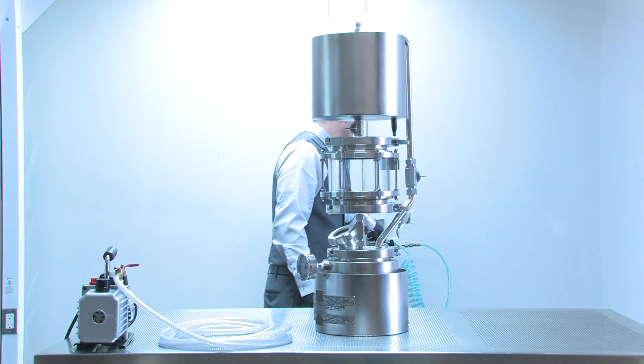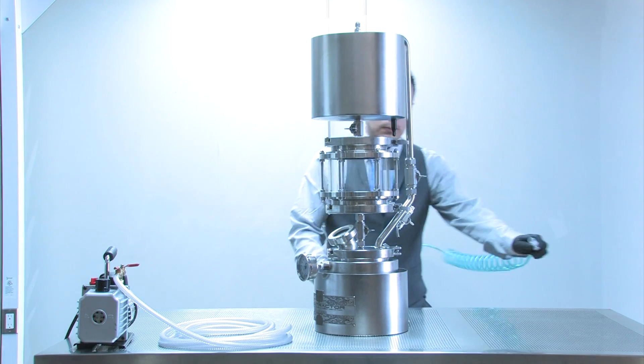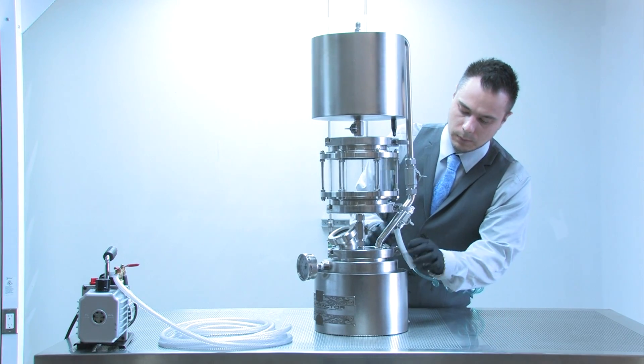If at all possible, you should locate your vacuum pump outside of your extraction room and run a vacuum line into the room, which is what we have done here.